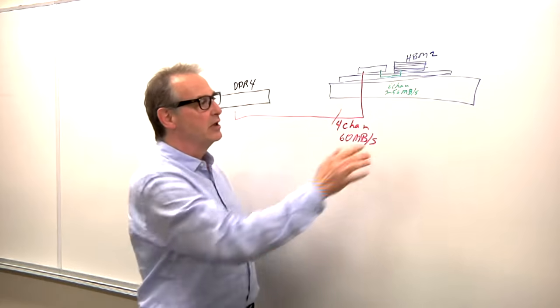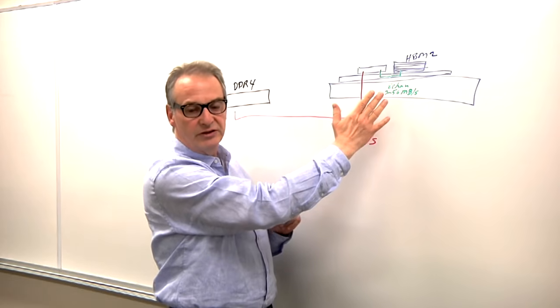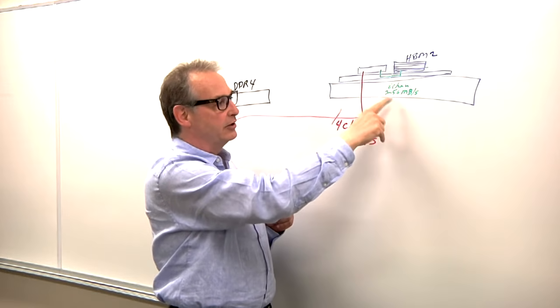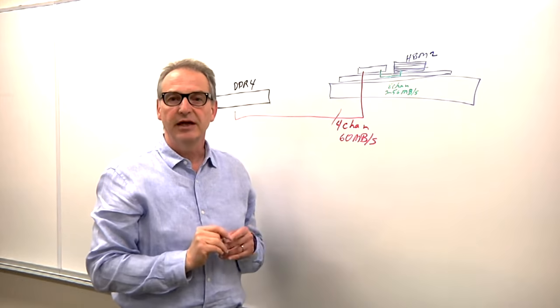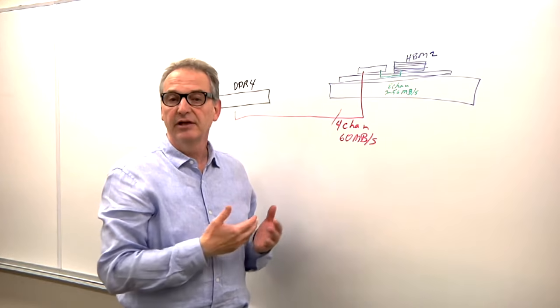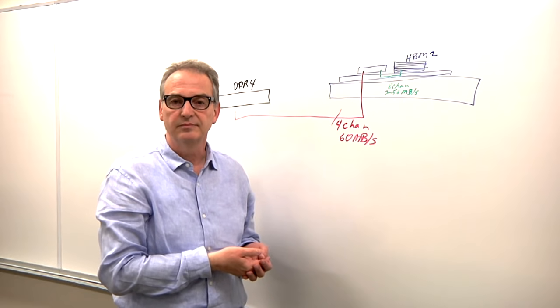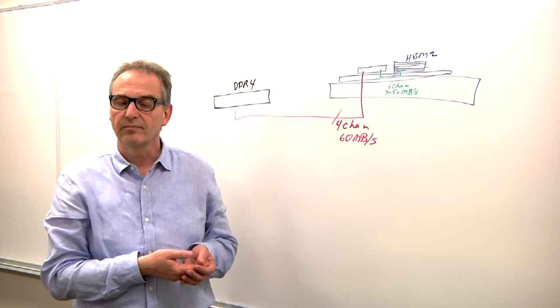If you move to HBM, the interconnect is much shorter. You've saved an awful lot of real estate on your board, and you end up with eight-channel interconnect and a total of 256 megabytes per second per stack. And you can put as many as four stacks in one package. What's the next iteration of this? Is it more stacks of HBM, or is it HBM3?